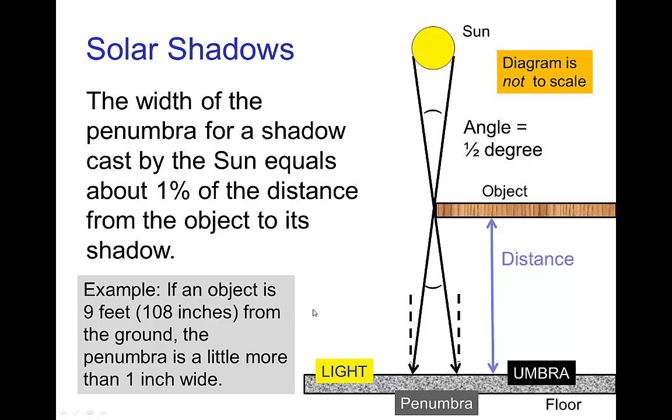So as an example, if an object is nine feet from the ground, that's 108 inches, then the penumbra is about one percent of that, which means it's about one inch wide.